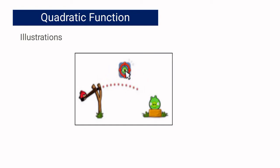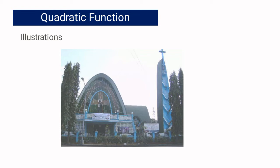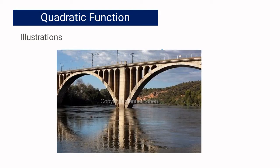Another illustration — are you familiar with this? Yes, this is a game. As you can see, from the bird going up to the peak, the direction follows that curve. The next illustration is a rocket being launched — we launch the rocket here, it goes in that direction, and then continues on that path. Our very own St. Jude Parish Church also illustrates a quadratic function based on this illustration. And most bridges also illustrate quadratic functions.